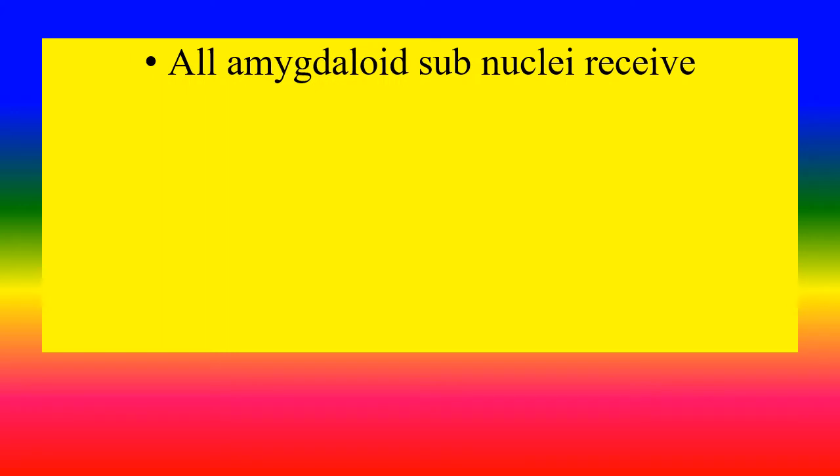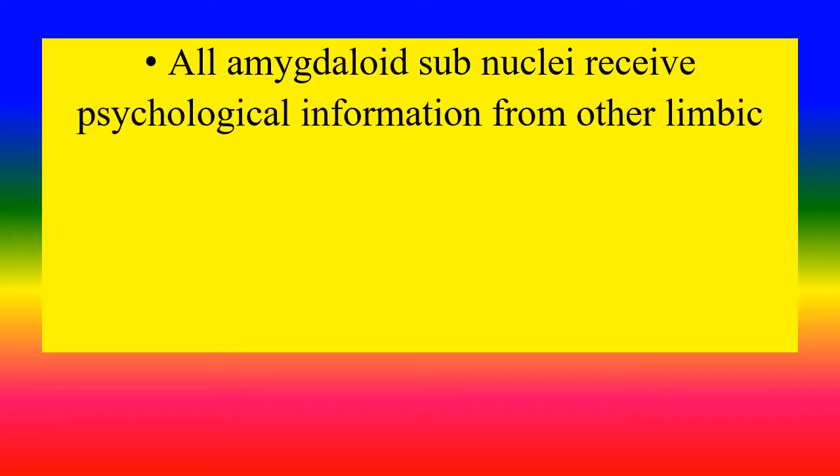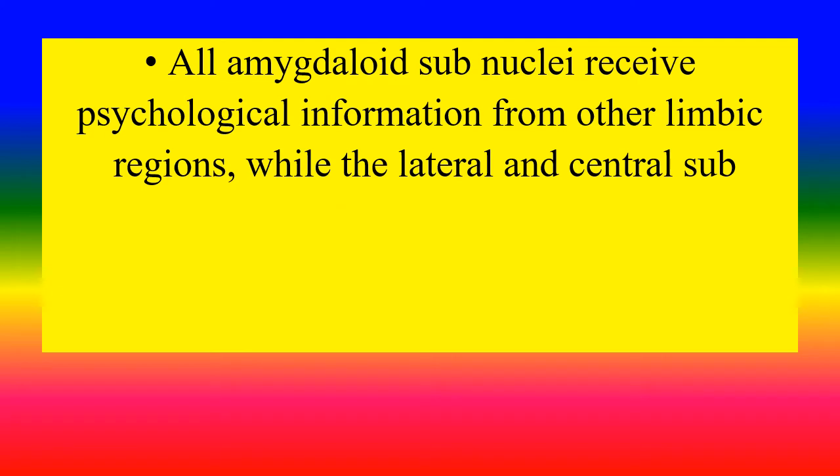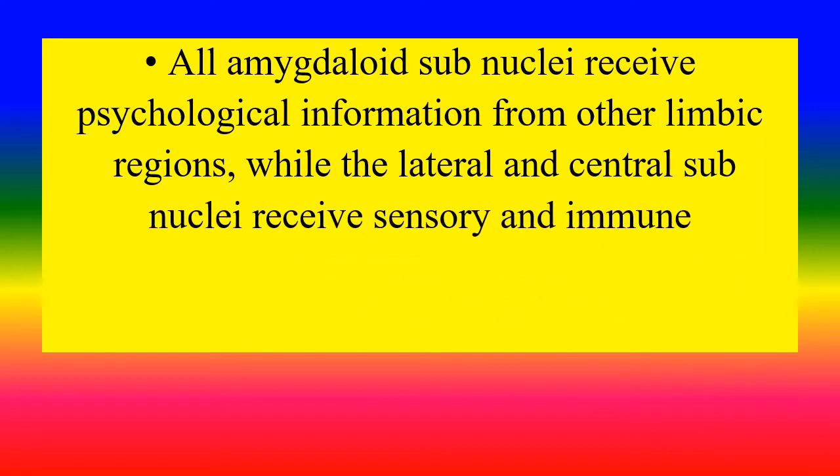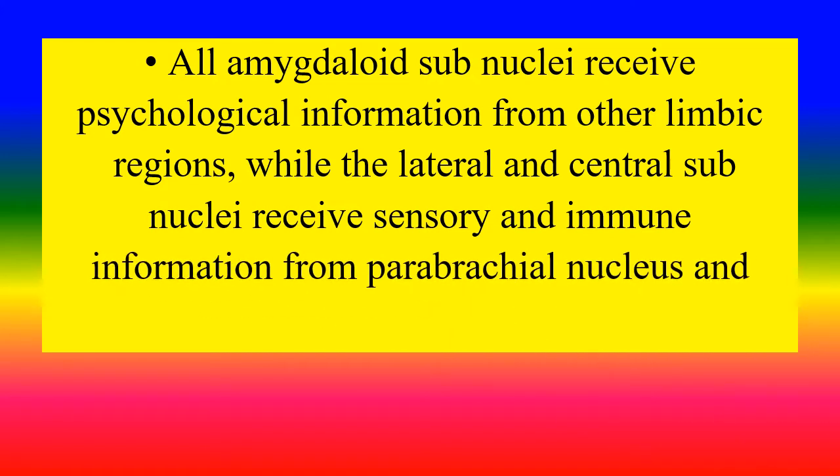All amygdaloid sub-nuclei receive physiological information from both limbic regions, while the lateral and central sub-nuclei receive sensory and neuroendocrine information from parabrachial nucleus and medial genicular nucleus.